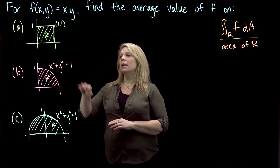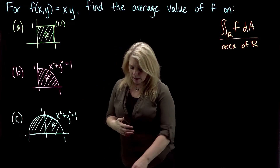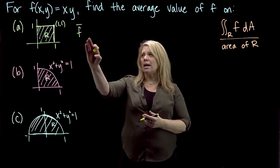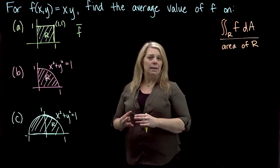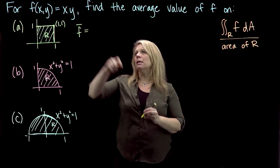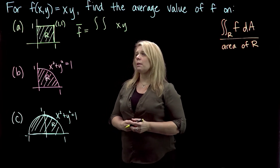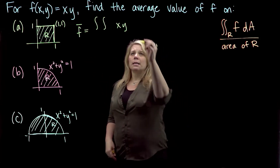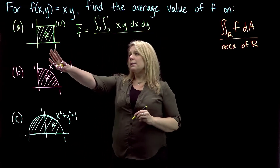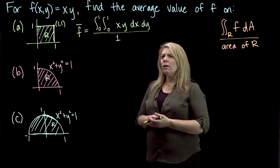I have three different regions here. The first one is a square, one by one, and we want to find the average value of this function on this square. I'm going to use the notation F-bar to indicate the average value — that's a symbol from statistics. We're going to integrate f(x,y) = xy on this region. Since this region is a rectangle, it's both x-simple and y-simple, so all limits of integration are constant. The area of this region is 1, so I don't have to divide by anything extra.